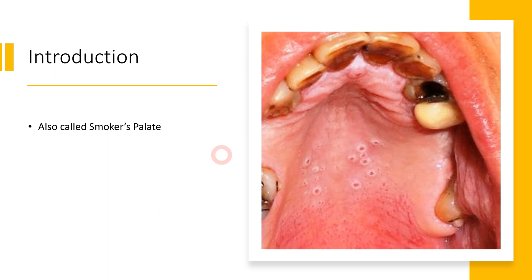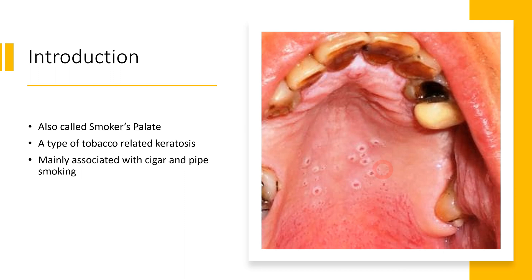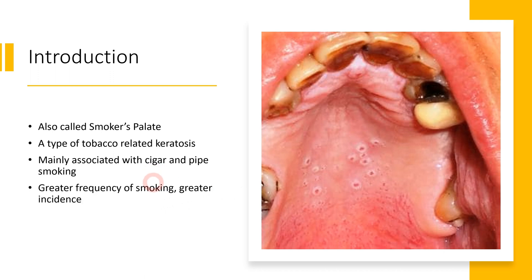This condition is mainly associated with patients who use tobacco, and the tobacco leads to inflammation which then leads towards keratosis. It can be identified when we observe the palate of the patient, especially those patients who are chronic smokers. This condition is more common in patients who use either cigar or pipe smoking. The greater the frequency of smoking, the greater the chances of developing nicotinic stomatitis.